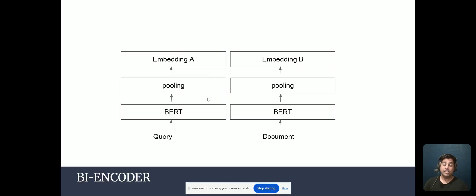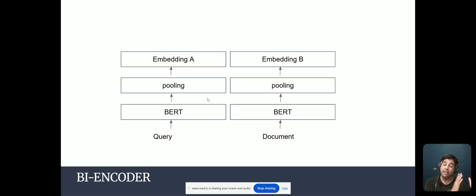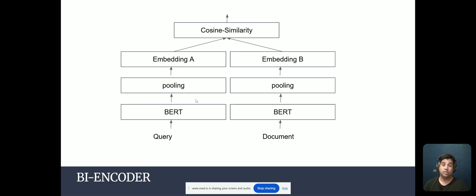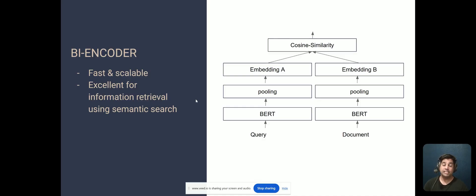The alternative is to split things out with two separate encoders — a bi-encoder. We have a separate BERT model with pooling and embedding layer for the query, and another BERT model with pooling and embedding layer for the document. We then compare how closely the query relates to the document using cosine similarity. By separating these two models, this is a fast and scalable solution, and it's excellent for information retrieval.